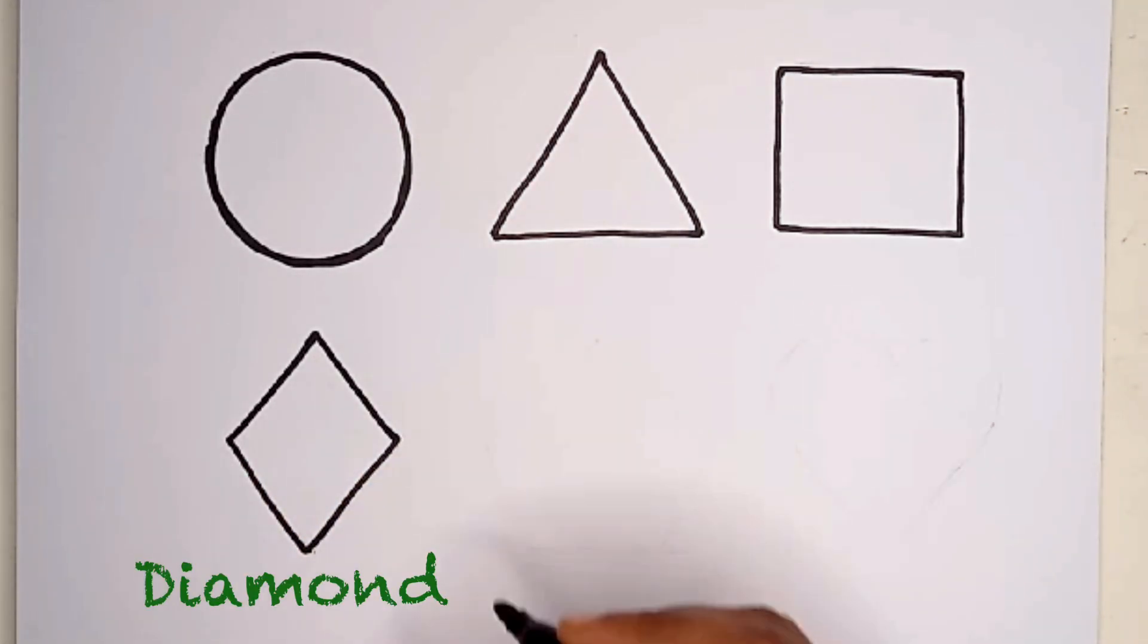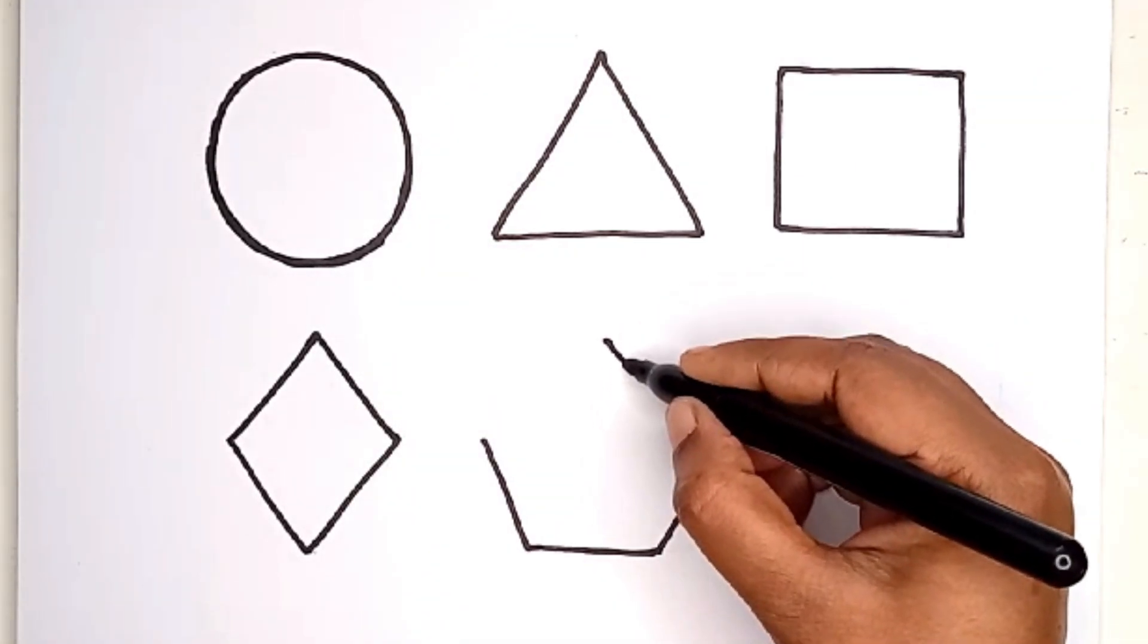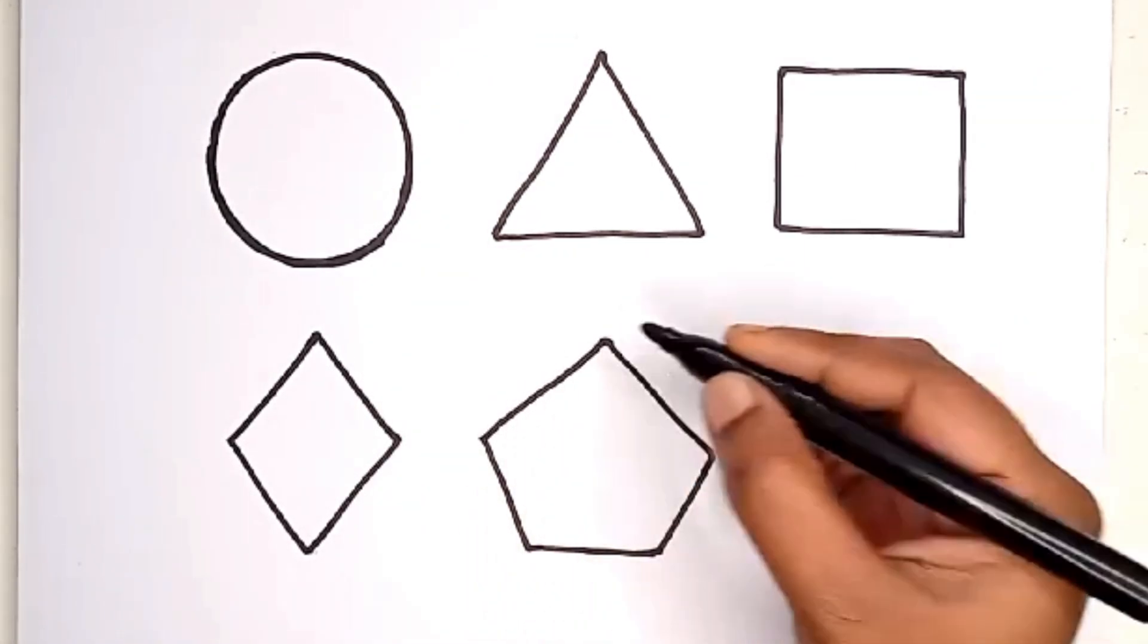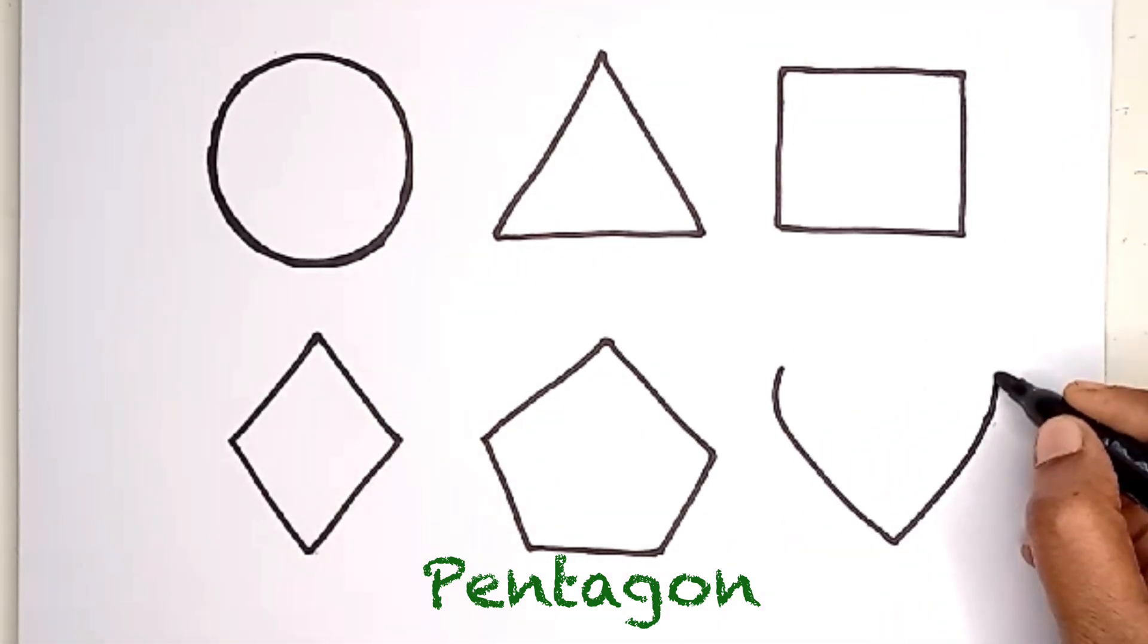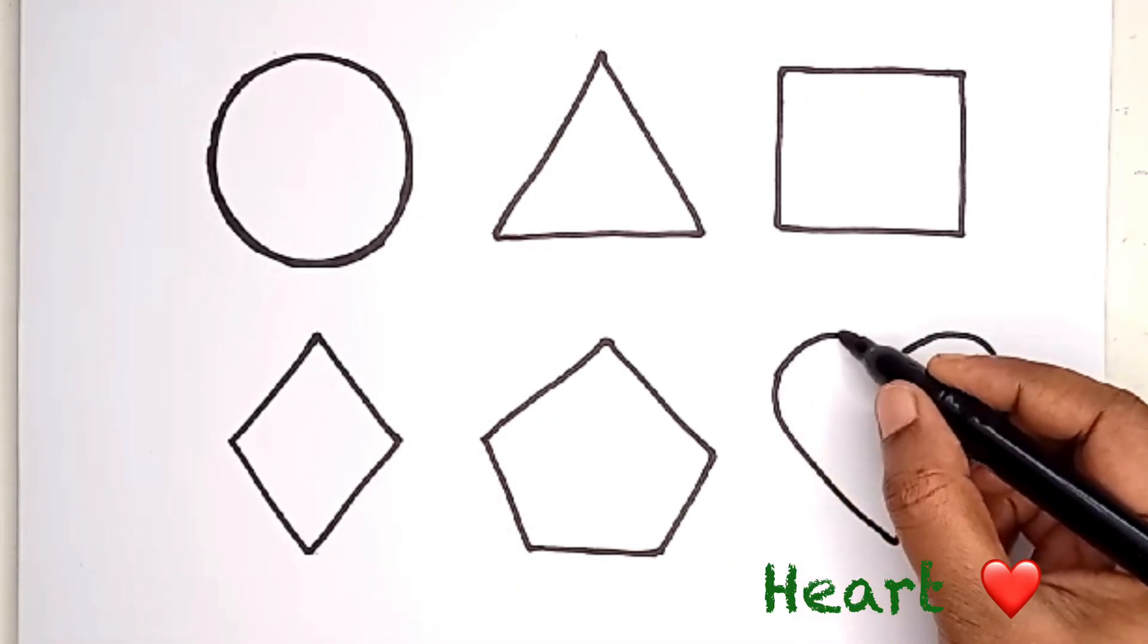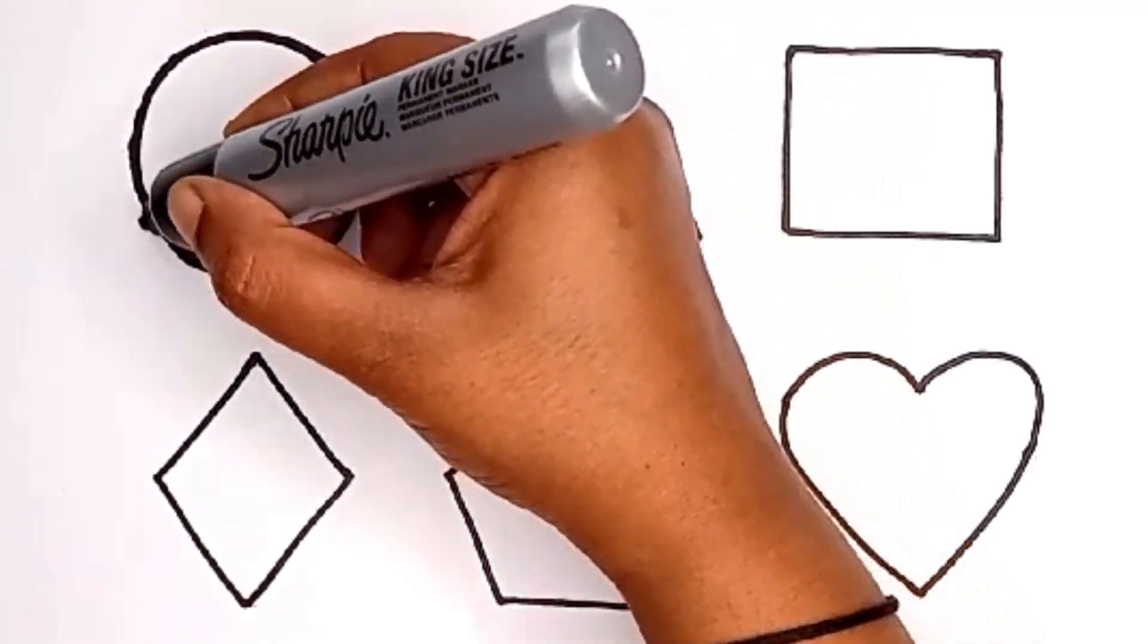Diamond. H-I-J-K-L-M-N-O-P, Q-R-S-T-U-V, W-X-Y-N-Z. Now I know my ABC. Heart. Next time won't you sing with me. Circle.